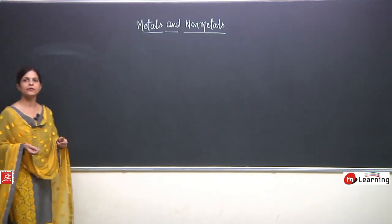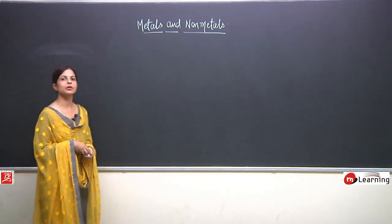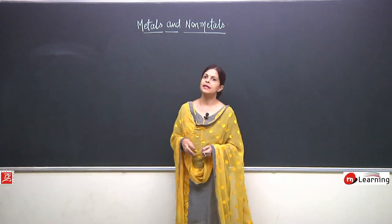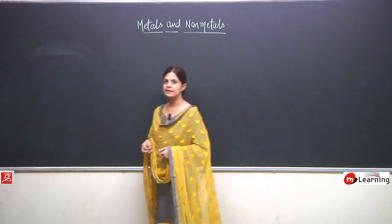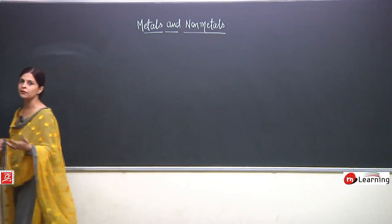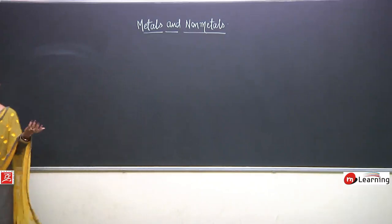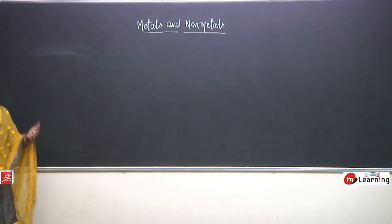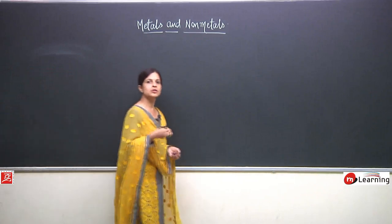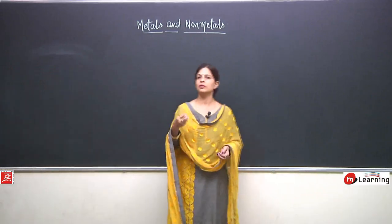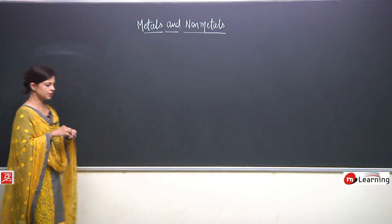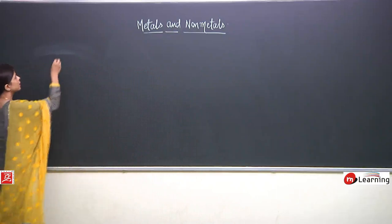In the last lecture we discussed about the physical properties of metals and nonmetals, and while discussing that I used words like graphite and diamond and I also said that these are forms of carbon. So I just want to explain a little bit more about that, starting with carbon.